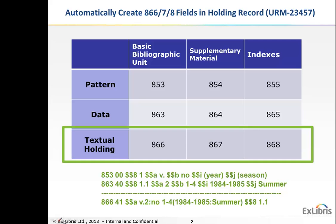Don't be alarmed by all these numbers, but basically holding records have these 85x and 86x fields with different information about the holding record. For example, let's take a look at this column over here. The 853 field, 863 and 866 all have to do with the basic bibliographic unit with things like volume, number, year, season, issue.